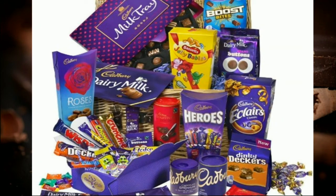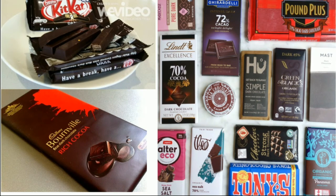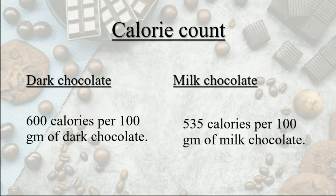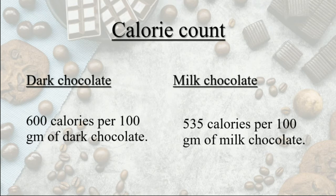Here are some examples of milk chocolates and dark chocolates available in the market — the list is endless so I have taken just a few. Now let's look at the difference between dark and milk chocolate. The first parameter is calorie count. Dark chocolate and milk chocolate are roughly balanced: 100g of dark chocolate has about 600 calories, and 100g of milk chocolate has about 535 calories, so there is not much difference.